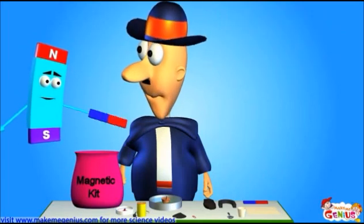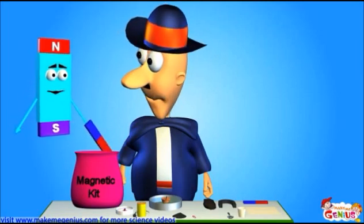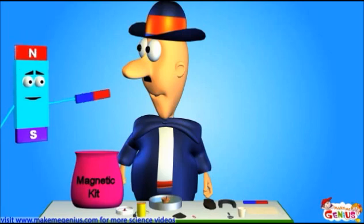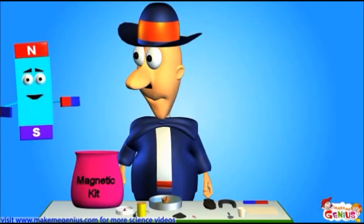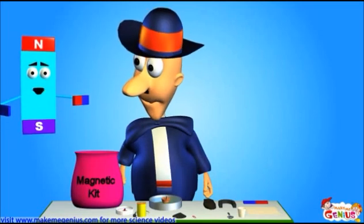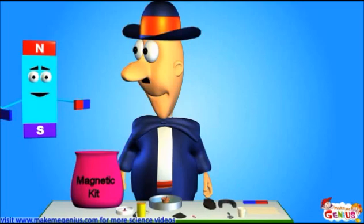One more thing about poles. Poles exist in pairs. Even if we cut a magnet into two parts, both of the parts would have a north and south pole. Watch as I break this bar magnet. Now I've made two small magnets out of one big magnet, but both of these small magnets have both of the poles.